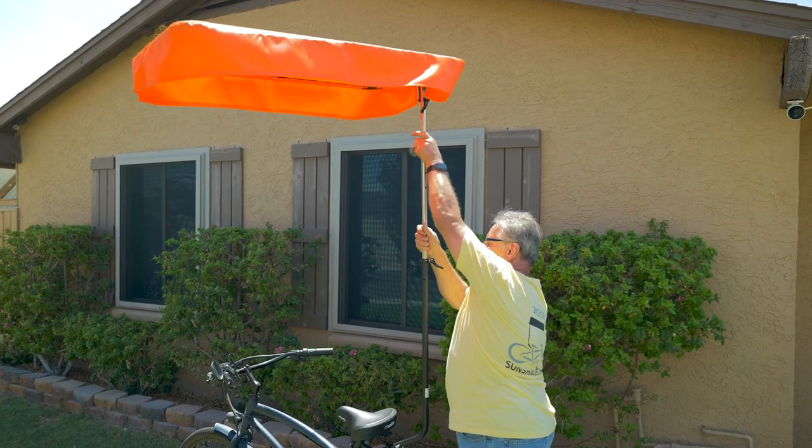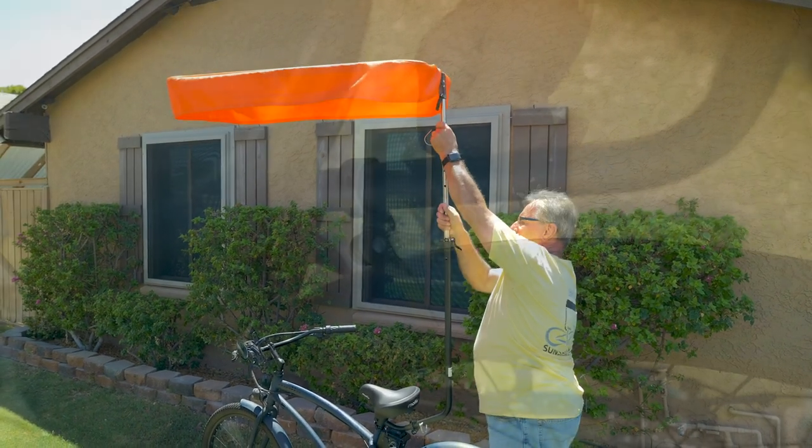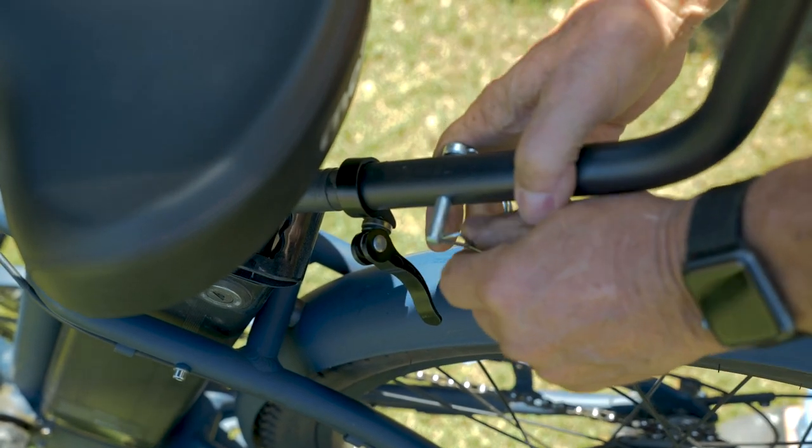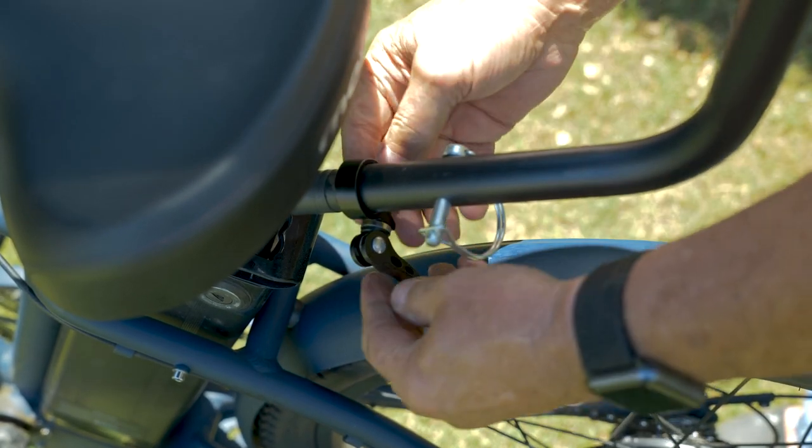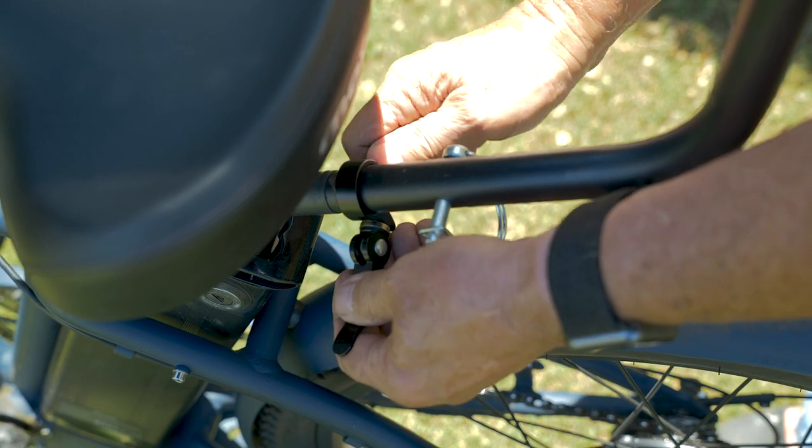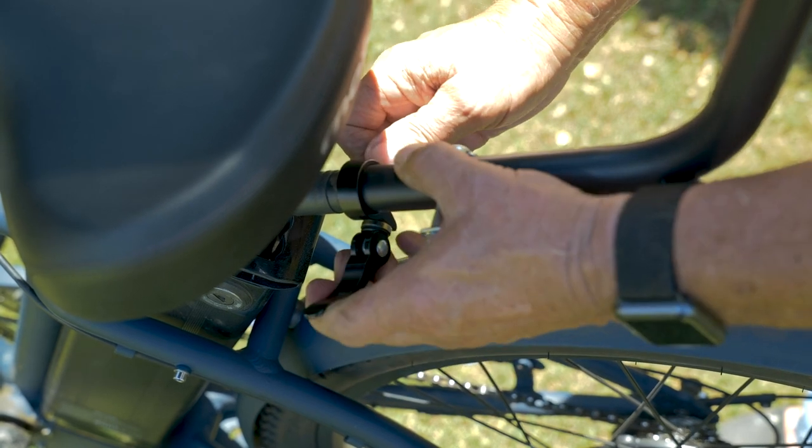Let's go ahead and insert the sunshade into the seat clamp. In order to secure the sunshade you'll need to make sure the safety pin is installed all the way. Also make sure the collar is fully clamped down.